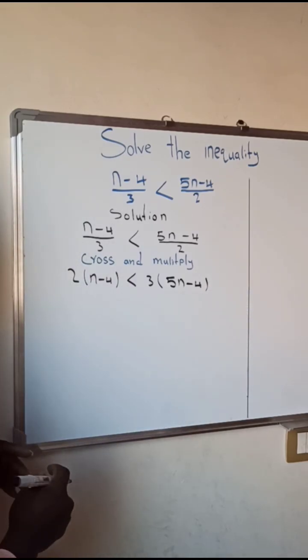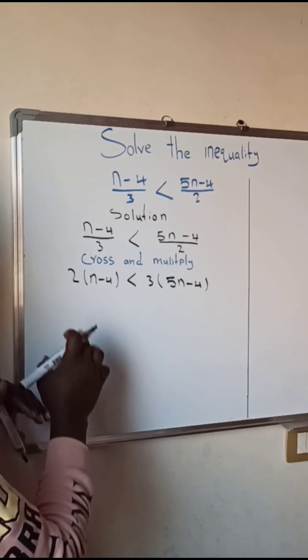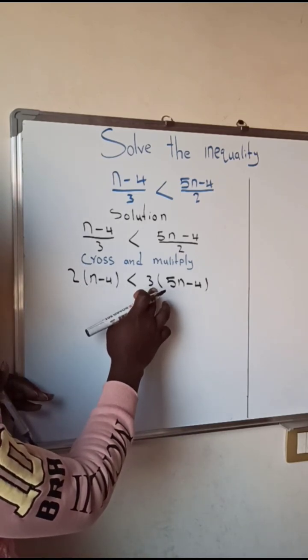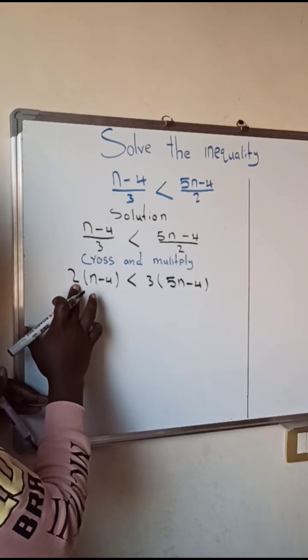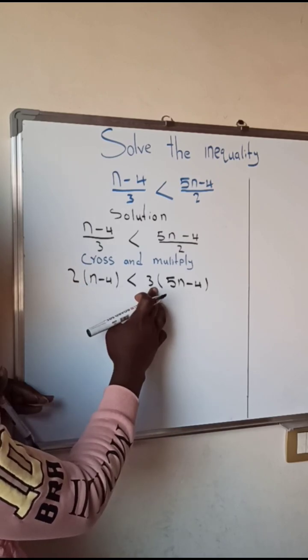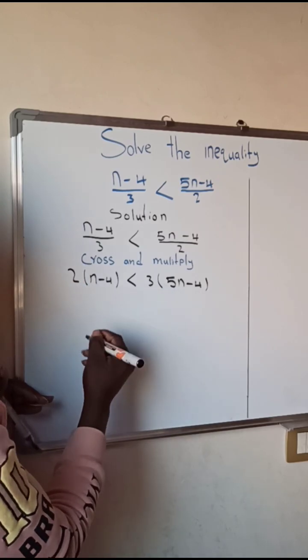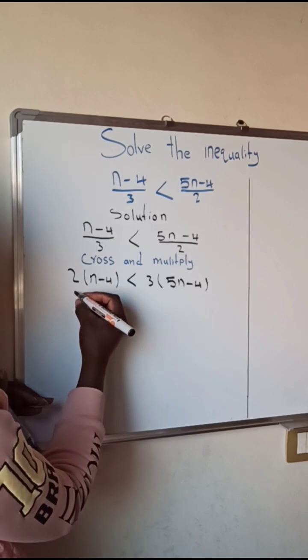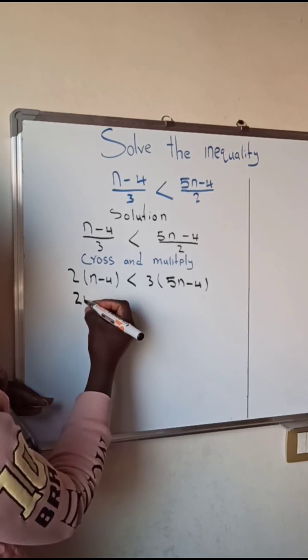So as you can see right now we have two brackets with some factor outside. Here we have 2 and also here we have 3, which means we're going to multiply this bracket with 2 and also here the bracket with 3. So we have here 2 times n which is going to give us 2n, 2 times negative 4 is going to give us negative 8.